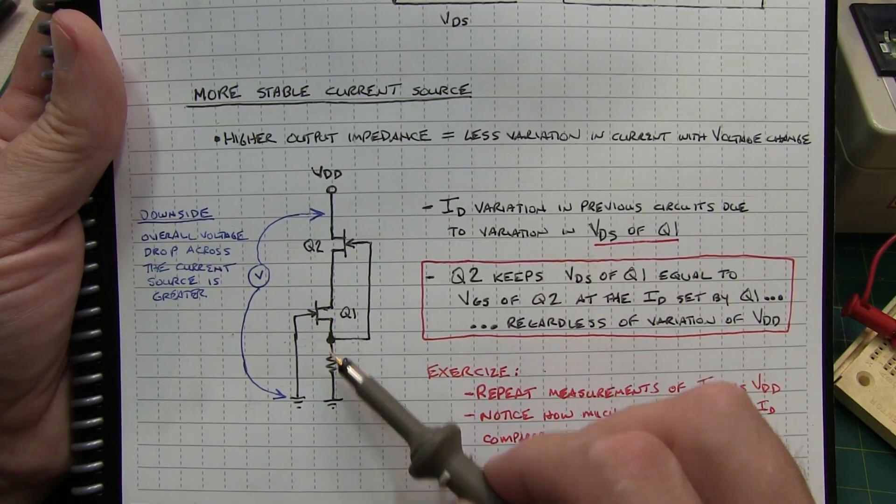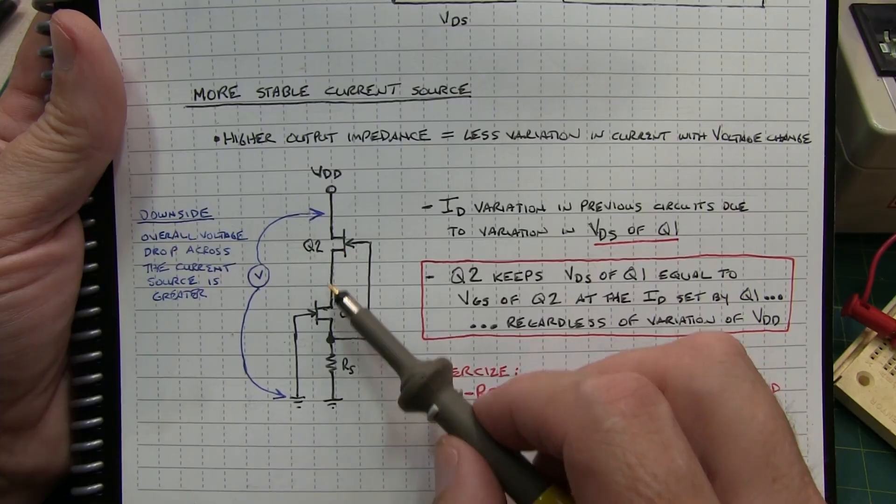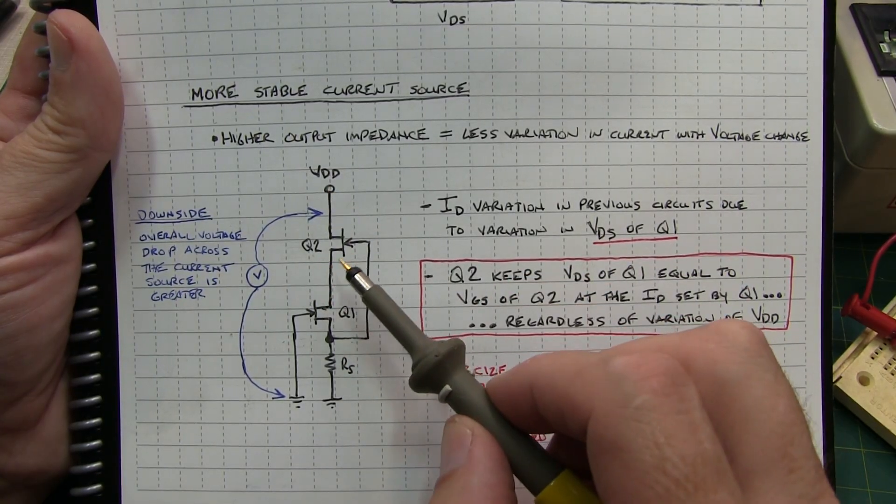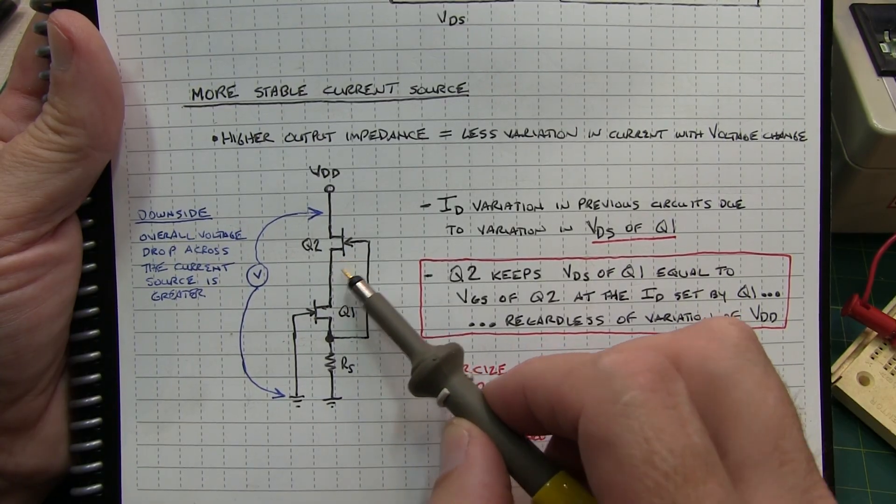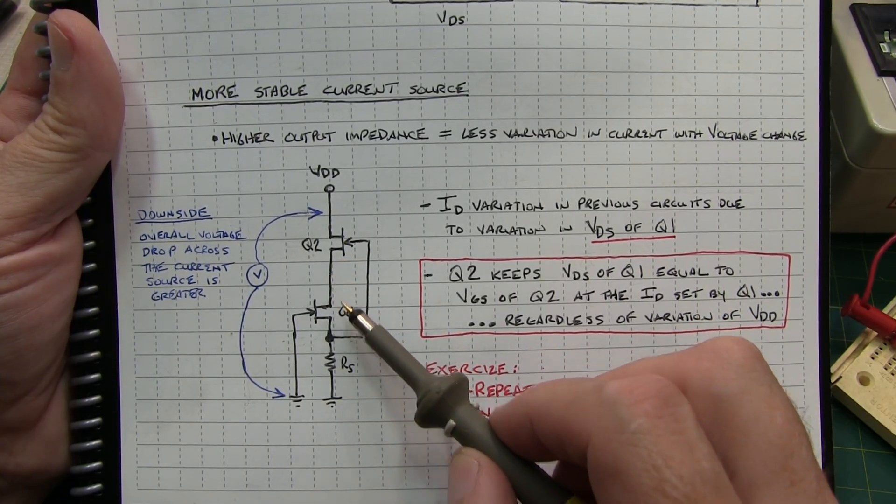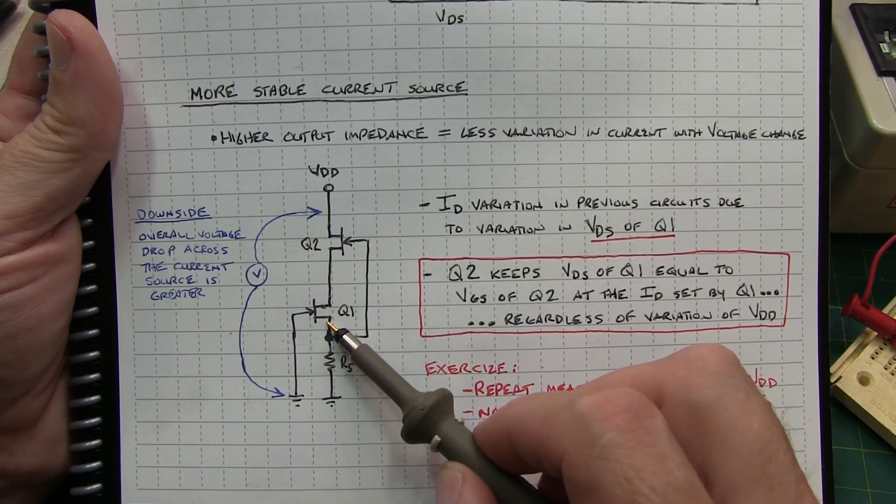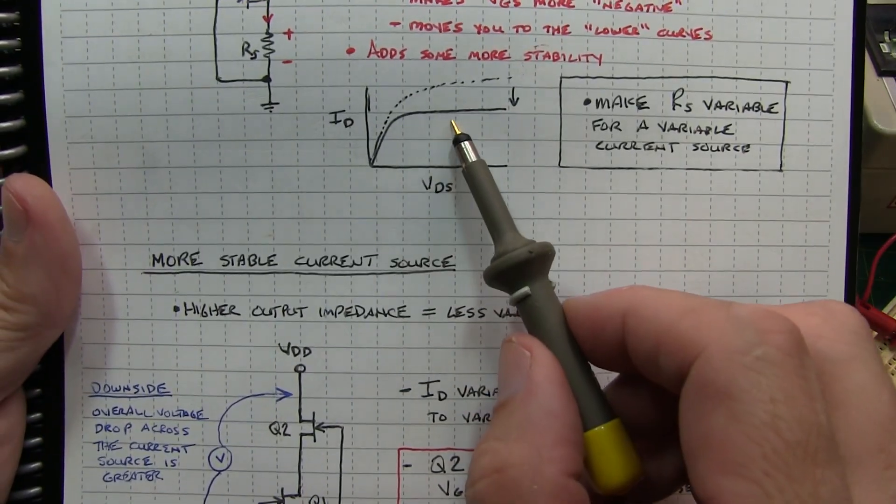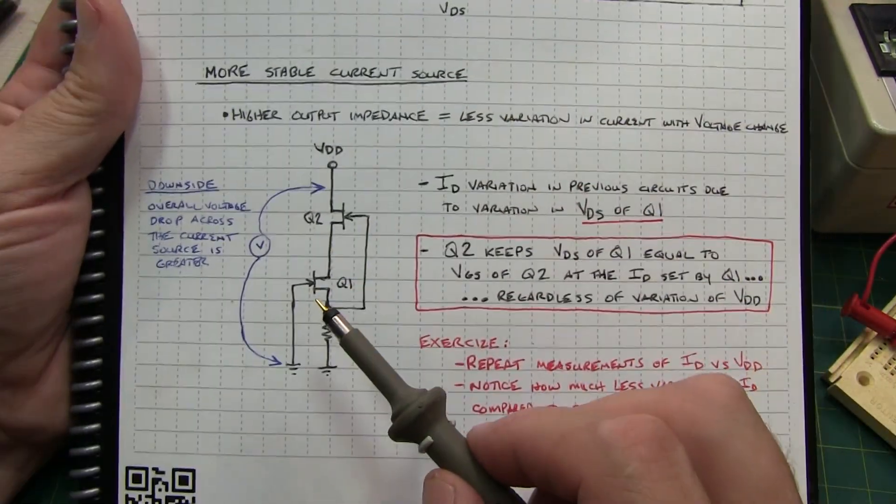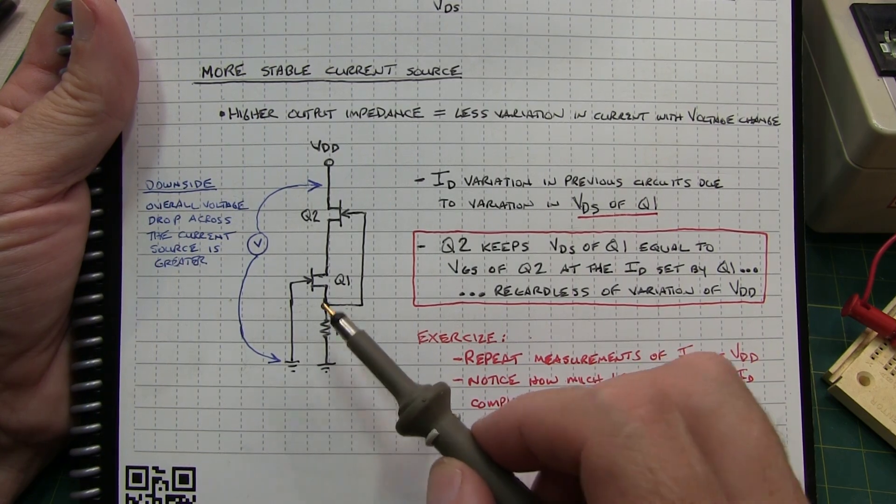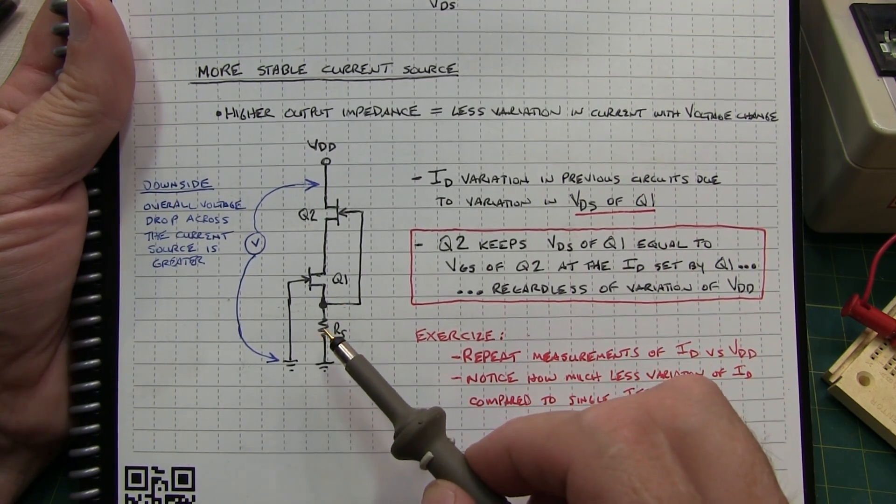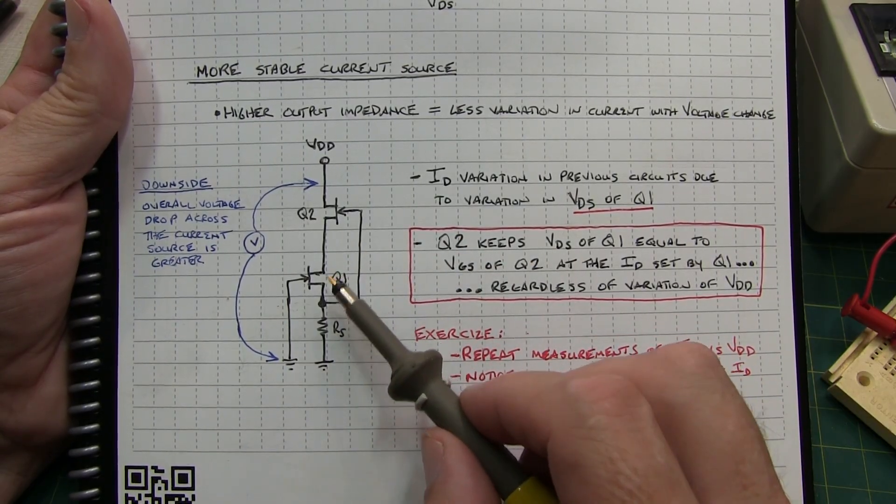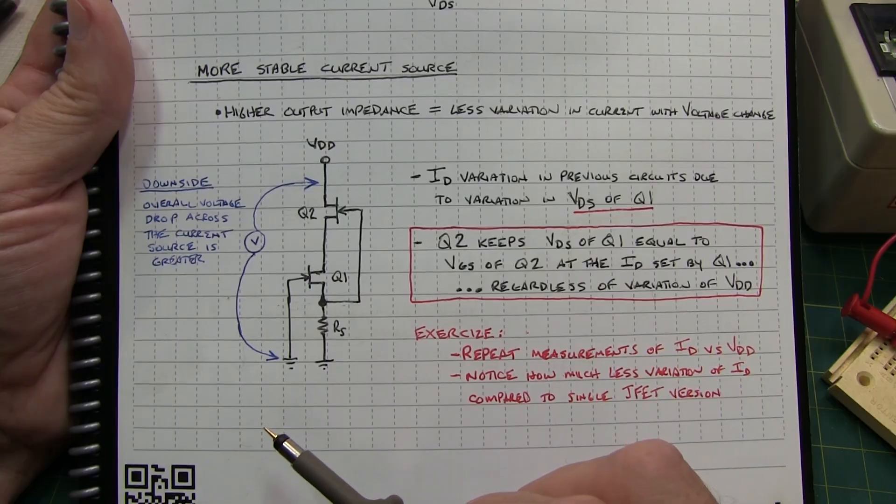This transistor sets the current source, the current value, and it means I've got a relatively constant current flowing through this device. That means I'm going to have a relatively constant VGS, therefore I'm going to have a VDS that's constant here that doesn't change much. And because I'm not changing VDS, I'm staying essentially in one spot in this curve. So it's going to make for a much more stable current source with a much higher output impedance. So again, Q2 is really helping to keep VDS of Q1 relatively constant.